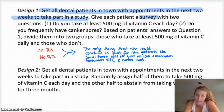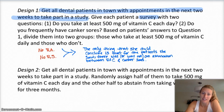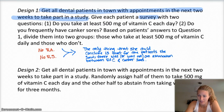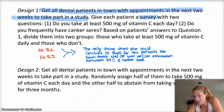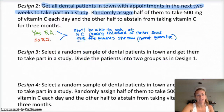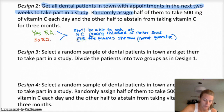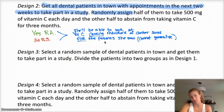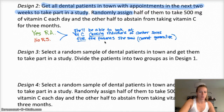For the first design, there is no random assignment and no random selection. So the only thing she can conclude is that for the patients she happened to see those couple of weeks, there was or was not — depending on whatever she discovered — an association between vitamin C and canker sores in those individuals. And it's just an association, not cause and effect. That's kind of a useless study unless all she cares about is those individuals. For design two, there's random assignment but no random selection. So she can look at vitamin C causing reductions in canker sores, but only for the patients she saw — she cannot generalize to the larger population or the people in the town.